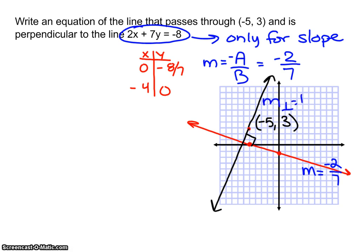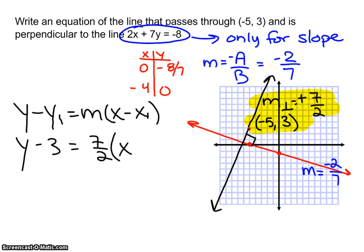Perpendicular, opposite, so we change the sign to positive. Reciprocal, flip it over, 7 halves. So with that black line, I have a slope now, and I have a y-intercept. So I now want to write that equation. Notice that one is positive, one is negative. So I have a point, I have a slope, so I can write point-slope form. So y minus my y-coordinate, slope, x minus my x-coordinate, minus negative 5.